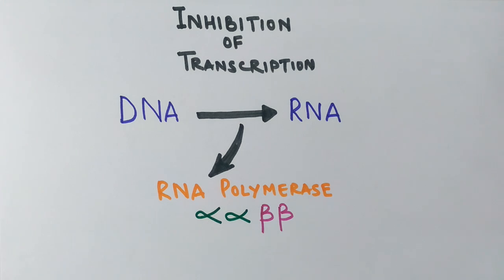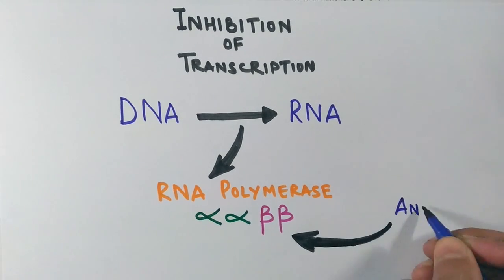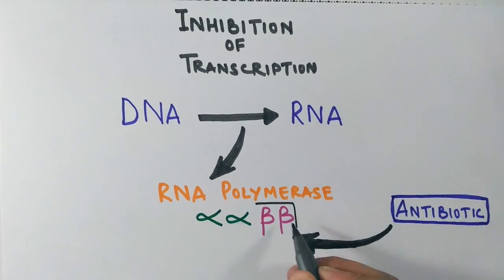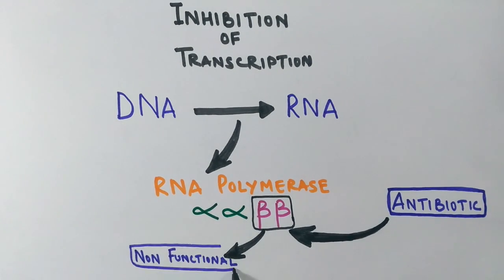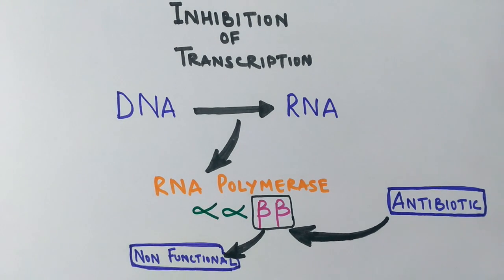That's why we say it's made up of only four subunits because the omega one only activates it. So here, the antibiotics target the beta subunits of RNA polymerase and render it non-functional. When the RNA polymerase is non-functional, there is no synthesis of RNA molecule from DNA molecule.